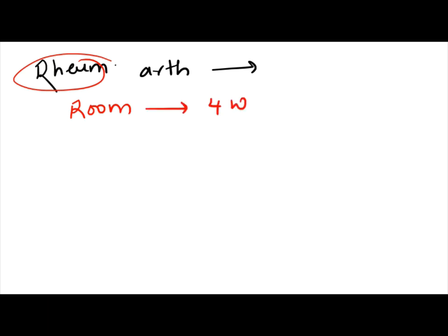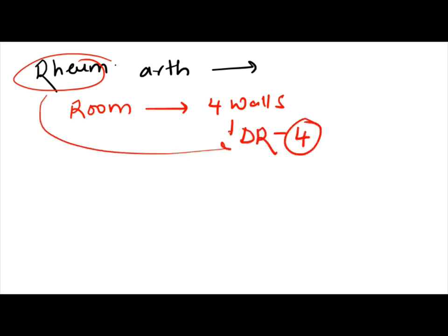HLA subtype associated with rheumatoid arthritis — remember that a room has four walls, so rheumatoid arthritis is associated with DR4.